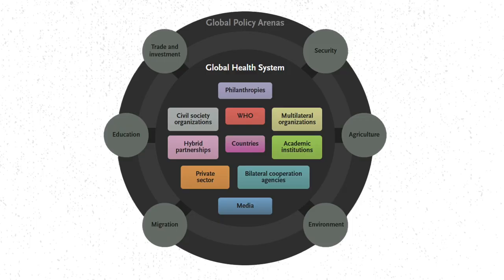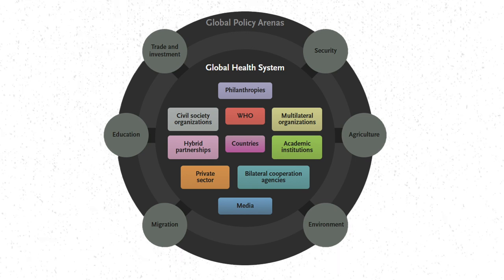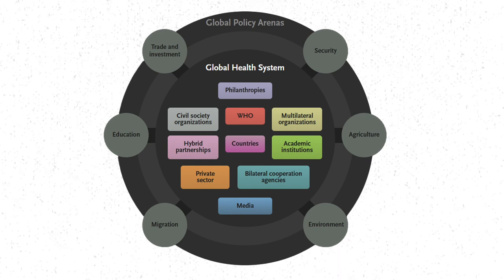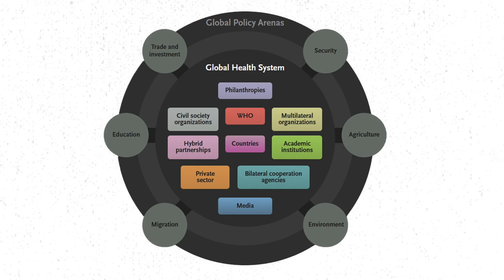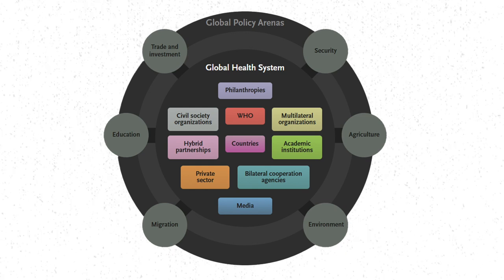Stewardship can also include evaluating across countries to ensure accountability and advocating for health outside the health sector. Going back to the earlier diagram, we can think of the actors in that inner circle as those whose primary intent is to protect and promote health. But we also have global governance processes happening in all the other sectors in the outer circle — in trade and investment, environment, agriculture, and migration — and decision-making in all these arenas can have a profound implication on health.